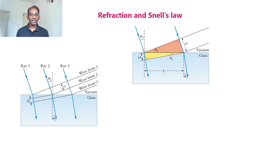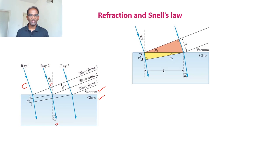To derive Snell's law, let us consider three rays incident on the surface of glass. One medium is vacuum and the second medium is glass, with angle of incidence theta_1 and angle of refraction theta_2. Since the first medium is vacuum, the rays propagate with velocity c, and inside the dielectric the rays travel with velocity v. Now let us consider a wavefront produced by these three rays. A wavefront is formed by joining equal phase points in the rays using a straight line.